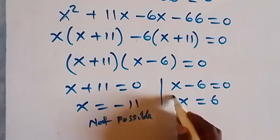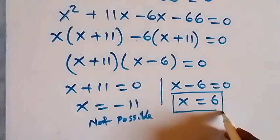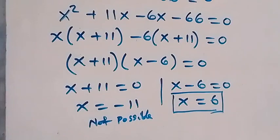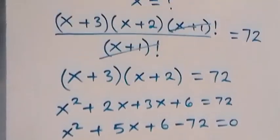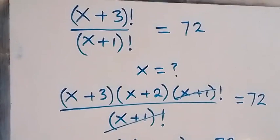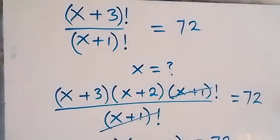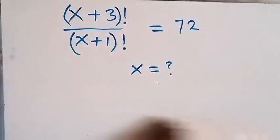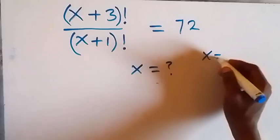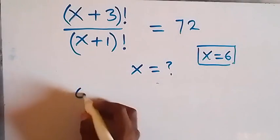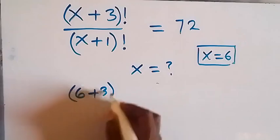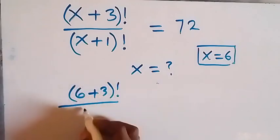So we have x equals 6. Let's check if x equals 6 satisfies the given equation. We have x plus 3 factorial over x plus 1 factorial equals 72. With x equals 6, let's substitute: this becomes 6 plus 3 factorial over 6 plus 1